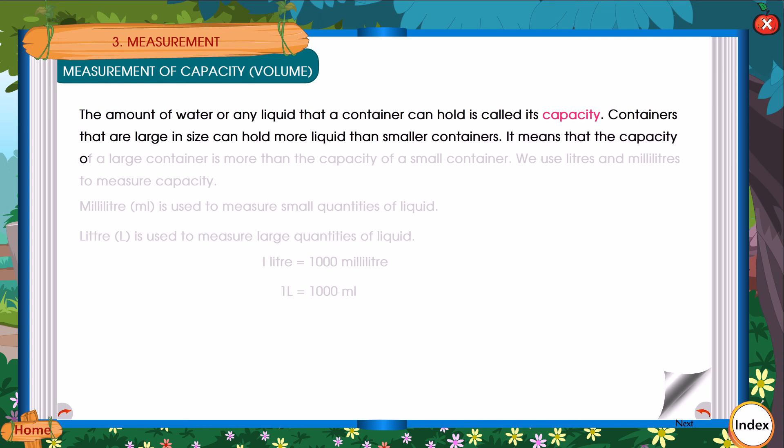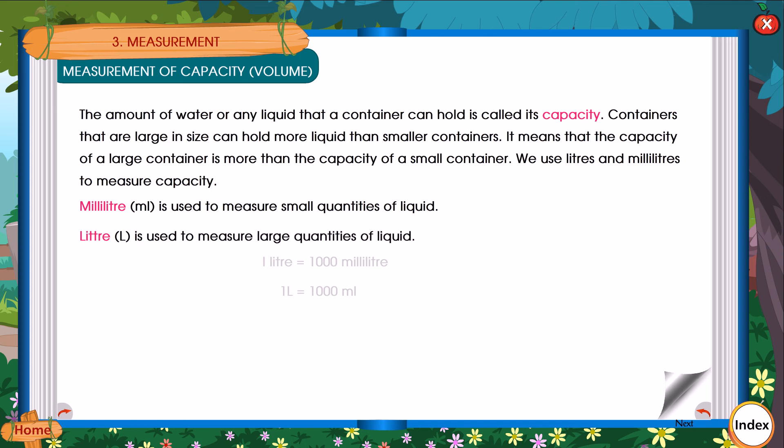We use liters and milliliters to measure capacity. Milliliters is used to measure small quantities of liquid. Liter is used to measure large quantities of liquid. 1 liter is equal to 1000 milliliters.